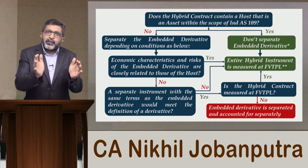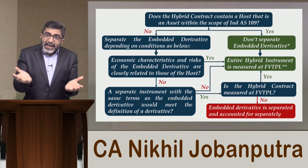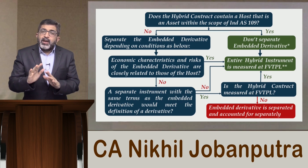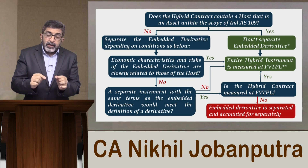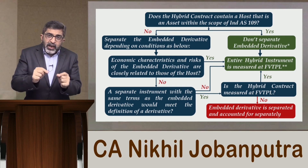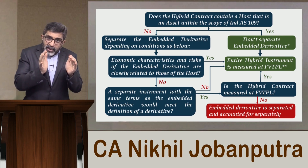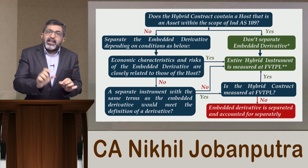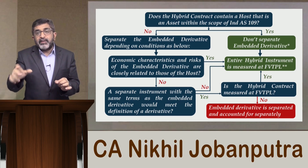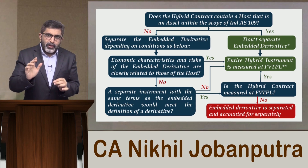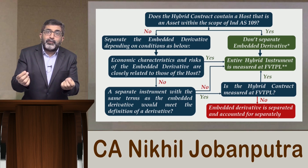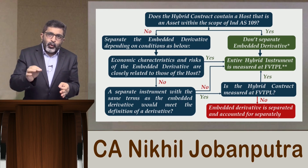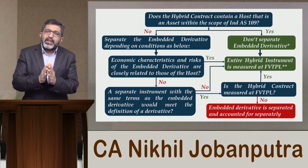If the answer is yes, determine the fair value of the embedded derivative and from the fair value of the entire hybrid contract, subtract the fair value of the embedded derivative — the residual value will be the value of the host contract. If the embedded derivative value cannot be determined, the next question is: can you determine the fair value of the host contract separately? If yes, then from the fair value of the entire hybrid contract minus the fair value of the host contract, that balancing figure gives you the fair value of the embedded derivative. If the answer to that question is also no, meaning you cannot independently find the fair value of either, then separation cannot be done and the whole hybrid contract is put in the FVTPL category without any separation.